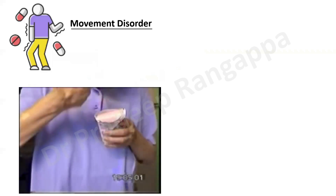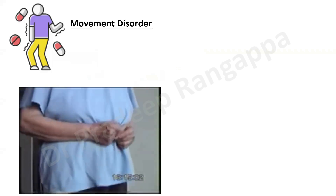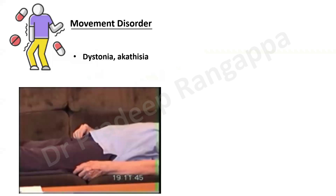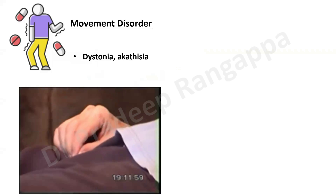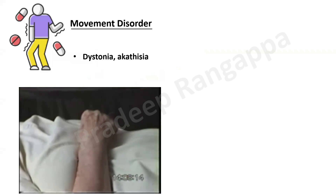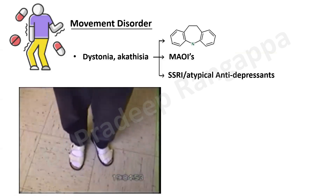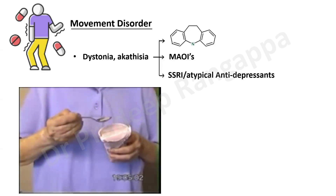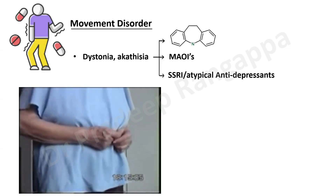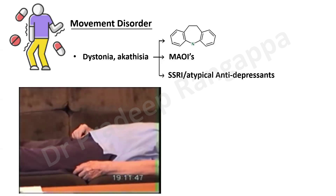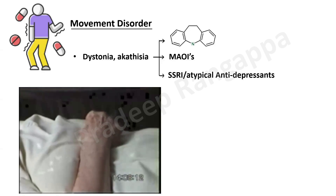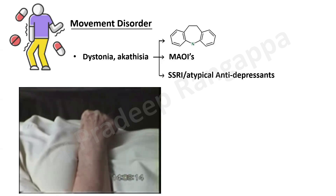Movement disorders are also caused by many drugs. Akathisia is a repetitive movement of certain motor activity, and approximately five percent of any drug can lead to repetitive movements and movement disorders. Movement disorders can also present as dystonia, commonly seen with antiemetics like chlorpromazine. The drugs most implicated in akathisia are tricyclic antidepressants, monoamine oxidase inhibitors, and SSRIs or atypical antidepressants.